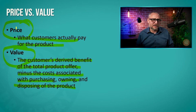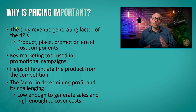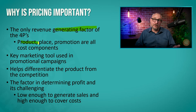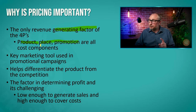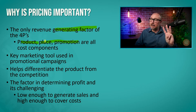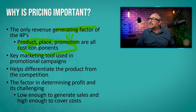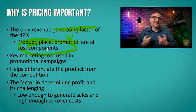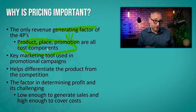Price is pretty important. It is the only one of the four Ps that actually generates money. Product manufacturing is a cost. Place and distribution is a cost. Promotion is a cost — and probably the most important cost. All of these are costs. Price is the only thing that generates revenue. So you want to make sure you do it right.